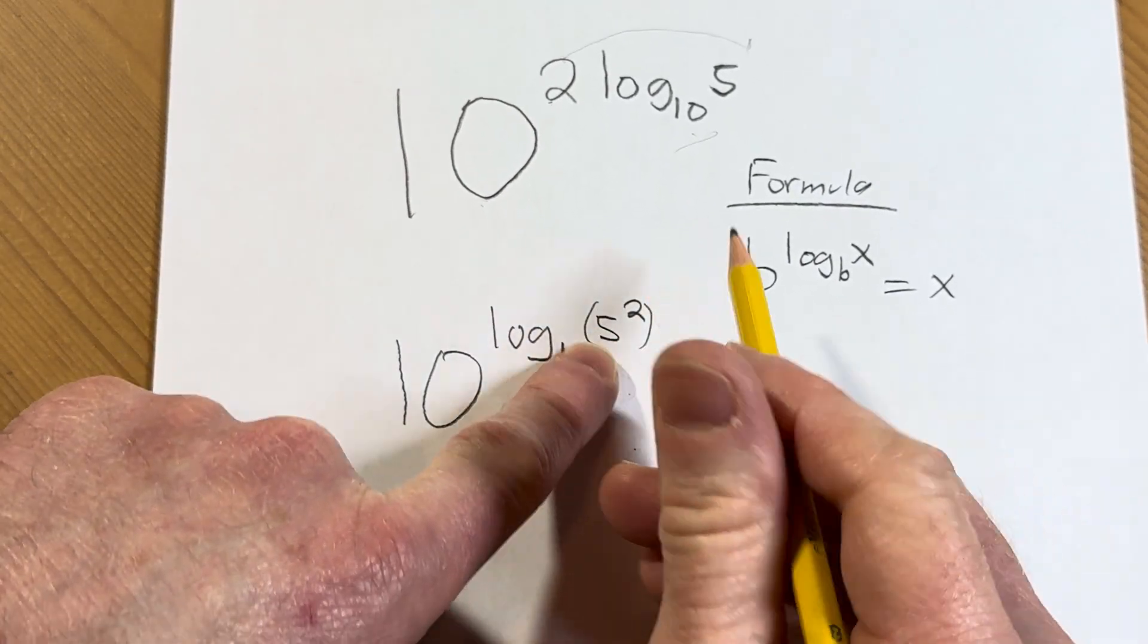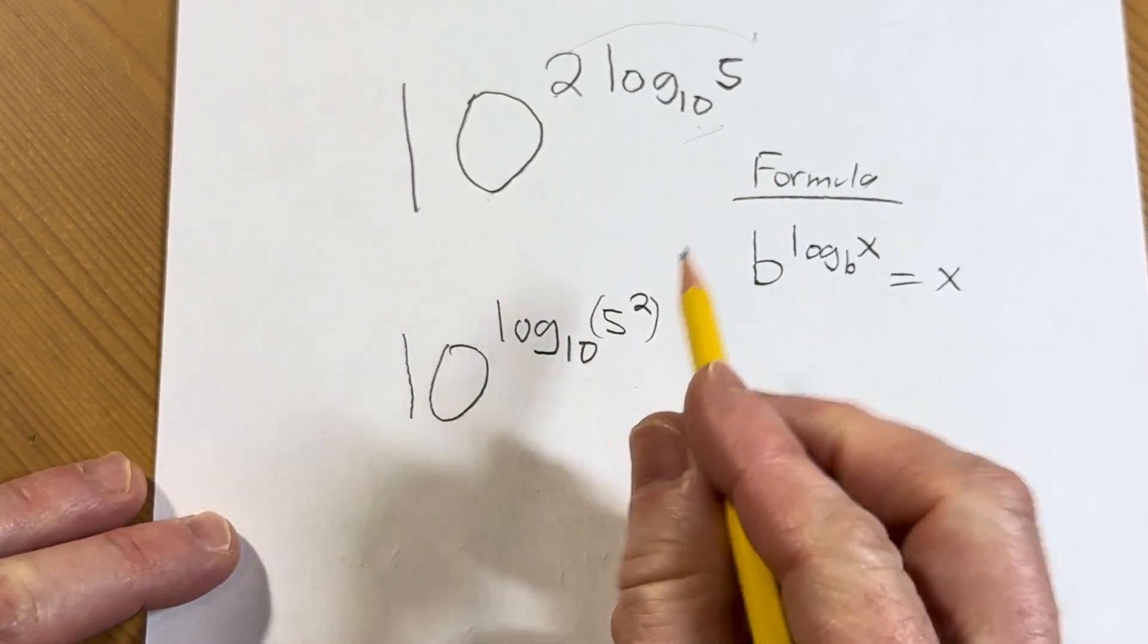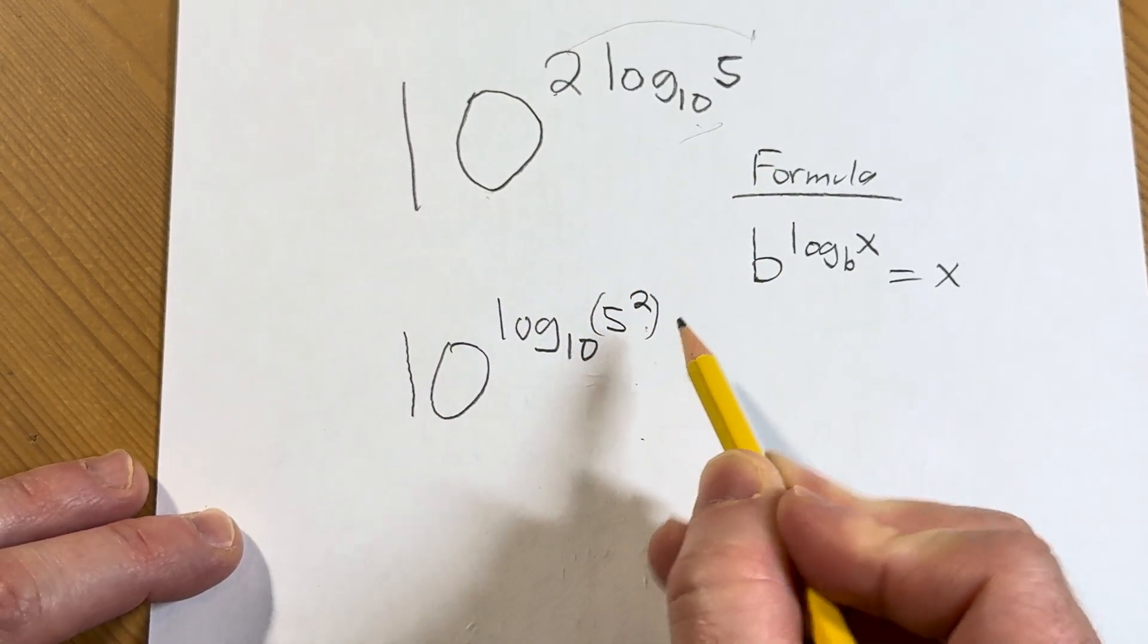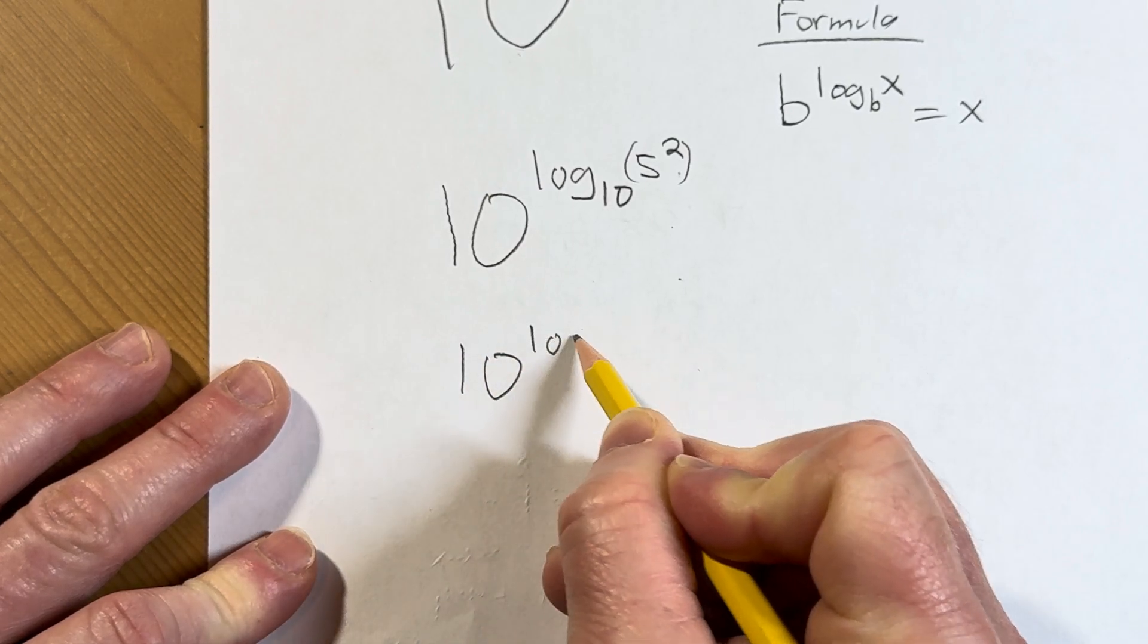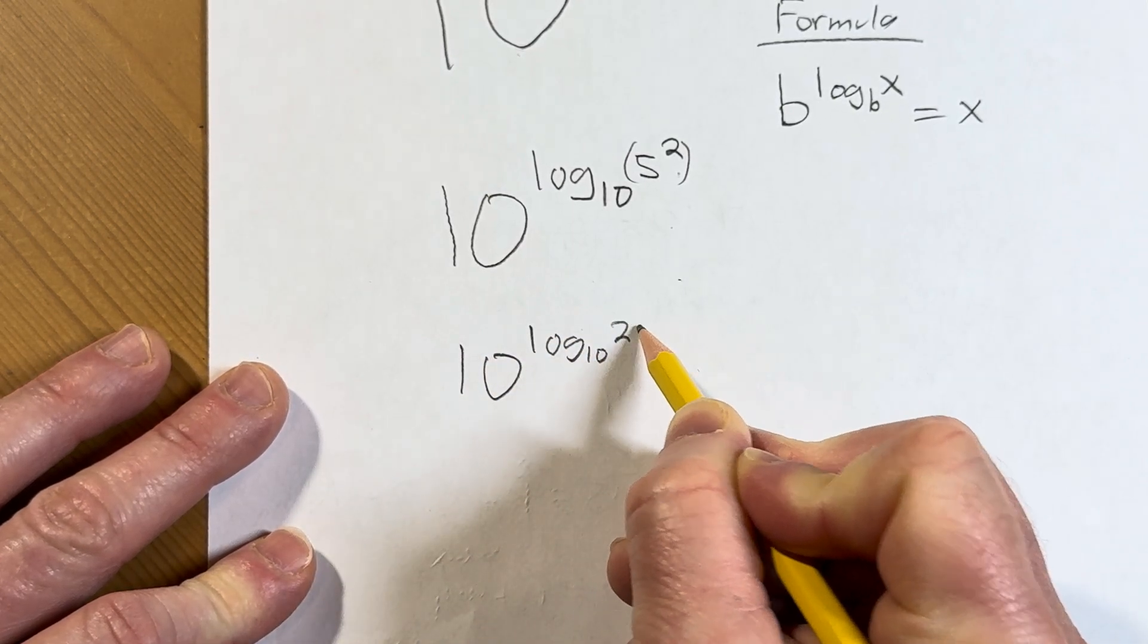And then I put the parentheses there just for emphasis that that's our x, the 5 squared, which is really 25. So this is really 10 to the log base 10 of 25.